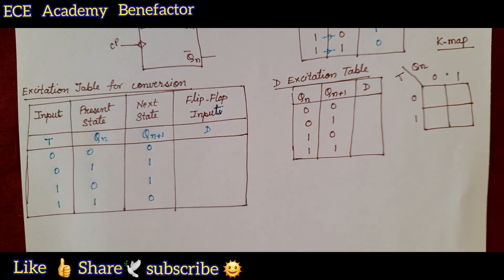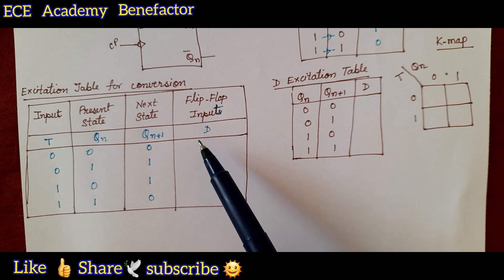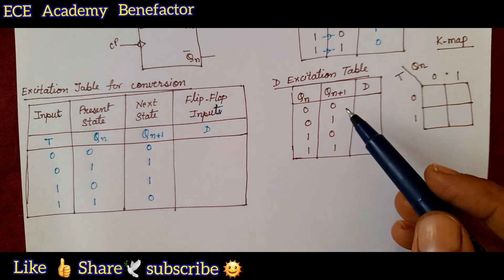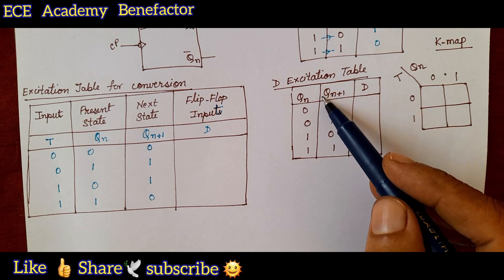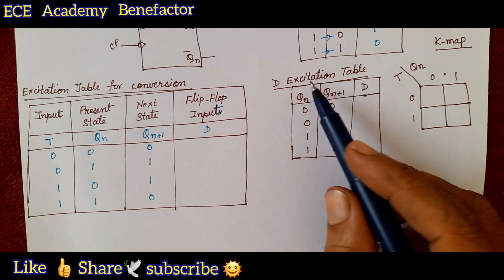After writing this we now need to fill the D column this flip-flop input. For this we need the excitation table of D flip-flop. What is D flip-flop? Whatever is Q n plus 1 the same is your D. D excitation table excitation.